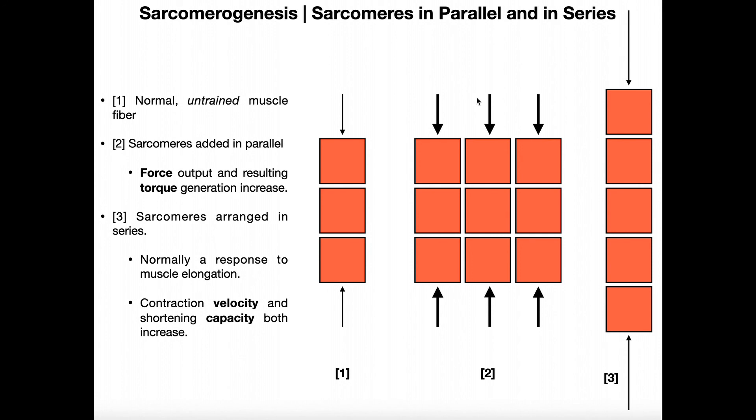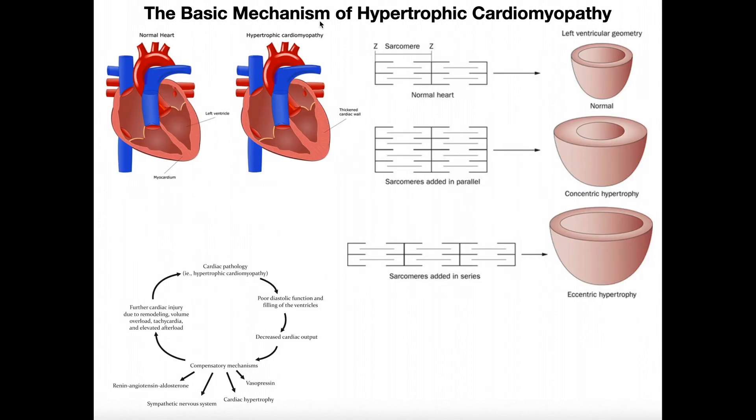So hopefully this made sense to you. And we're going to use this concept in the next video and talk about a basic mechanism for hypertrophic cardiomyopathy. This is a pathology of the heart where the heart muscle itself enlarges. In fact, the common name for this condition is an enlarged heart, and it's a very bad thing. We're going to talk about what causes it and also the mechanism with sarcomeres added in parallel versus in series.